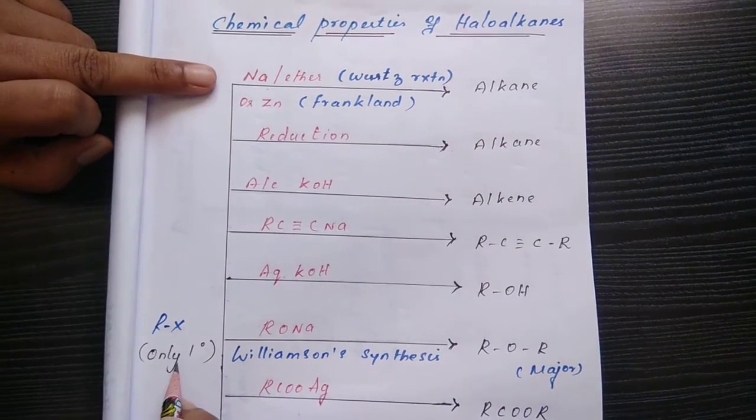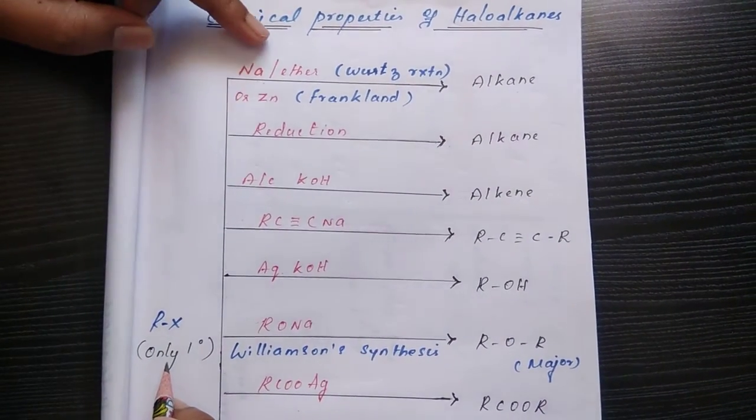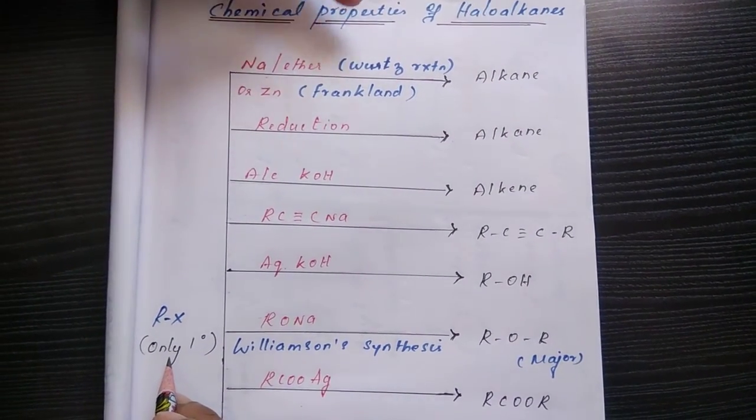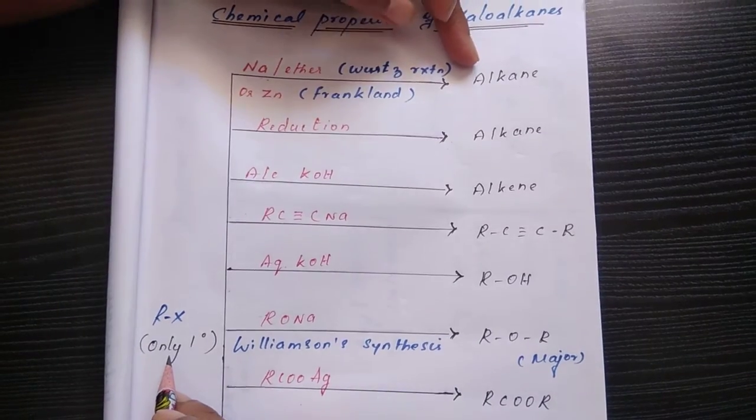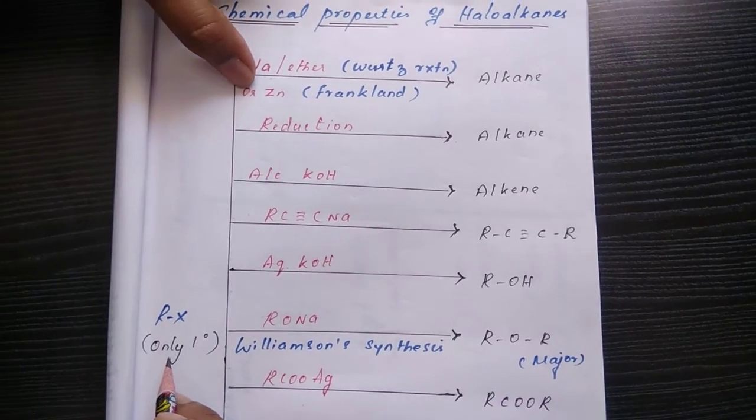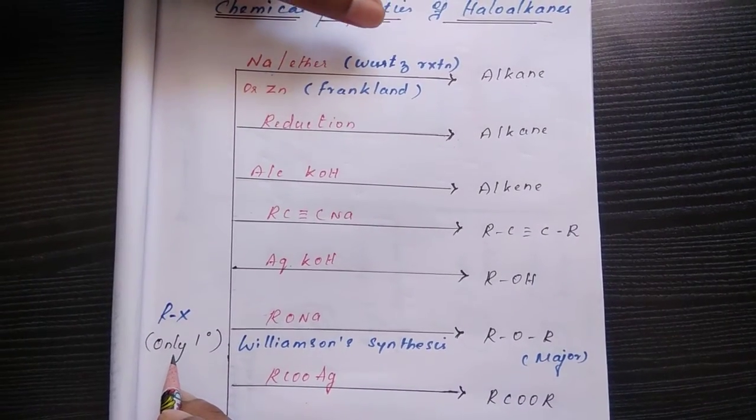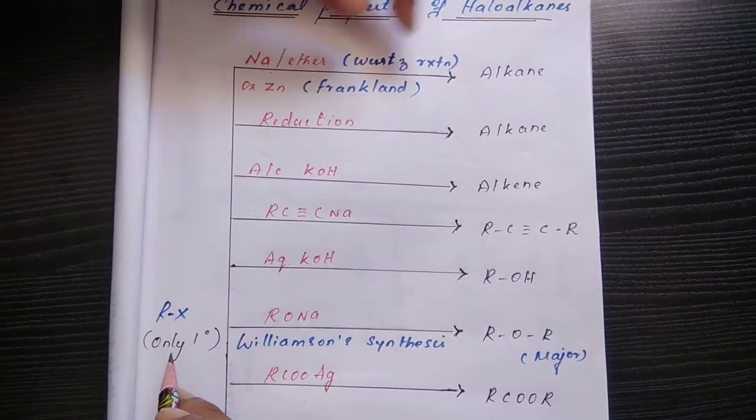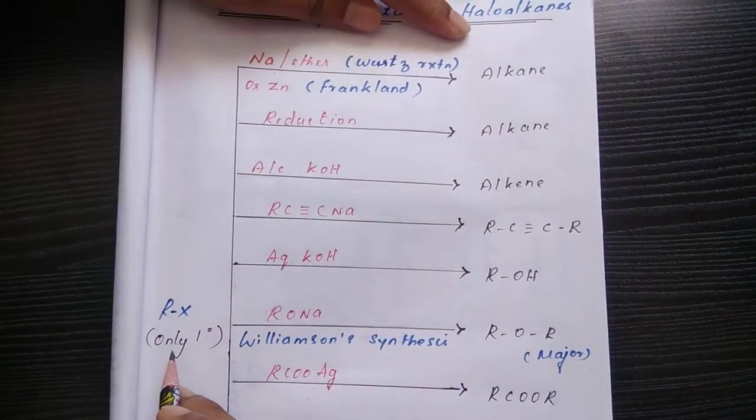The first reagent reacts with metal sodium in presence of ether. This is a well-known reaction, Wurtz reaction. We get alkane as a product. As well as the same procedure, instead of sodium if you are using zinc, Frankland reagent is happening. That will undergo reaction with RX and give alkane.